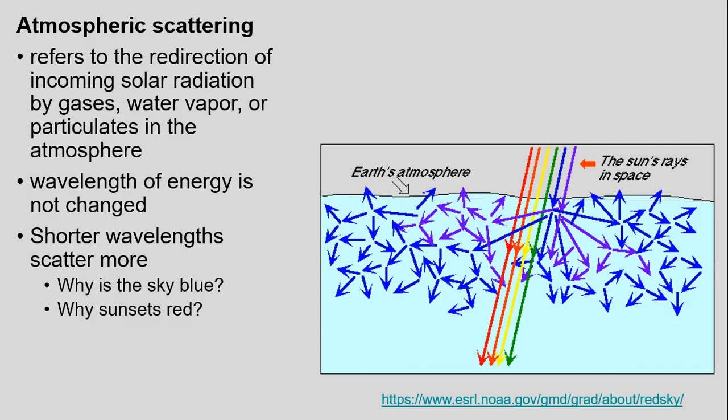Shorter wavelengths are generally scattered more. Looking at the visible light spectrum, violet light gets scattered out within the atmosphere. Blue light also has a lot of scattering but is what is able to get down to the surface and reach our eyes. That is in part why we see the sky appearing blue.